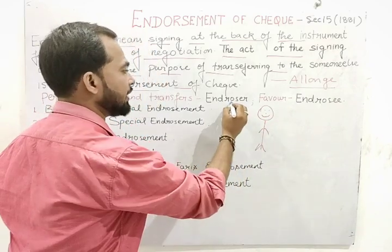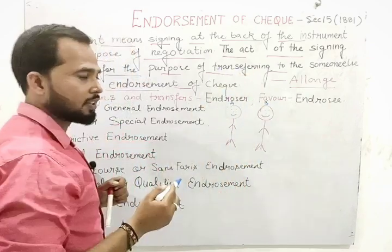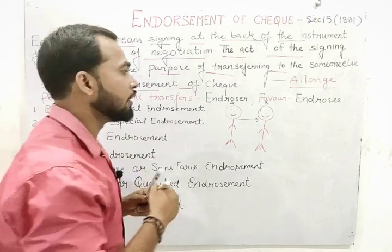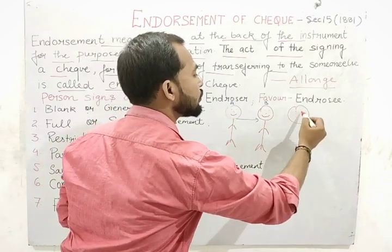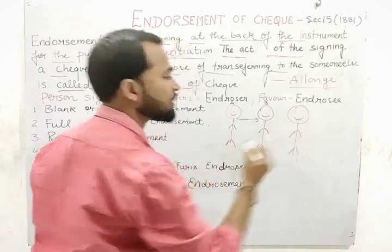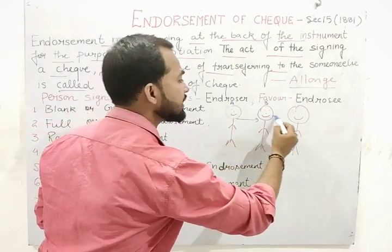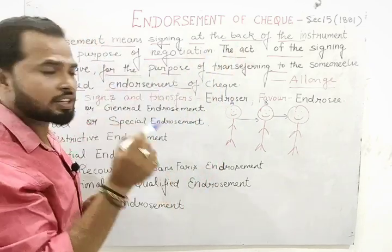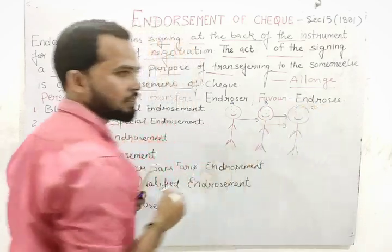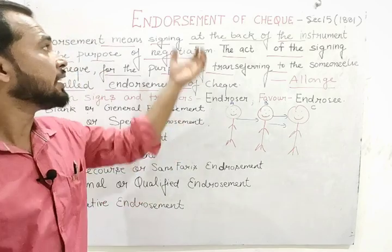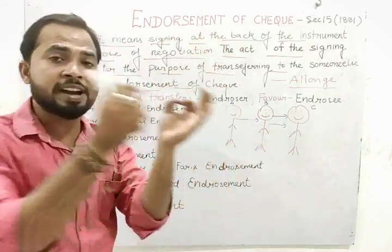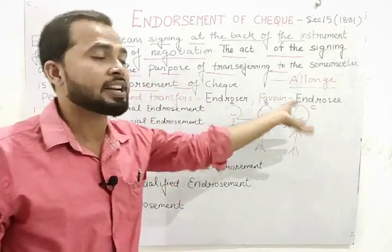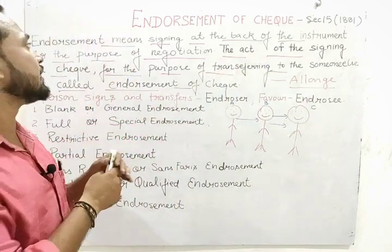For example: Mr. A has written a check in favour of Mr. B. Suppose it is an order check, and Mr. B wants to transfer it to Mr. C. So how can he transfer it? He has to write on the back side of the check that this particular check will be transferred to Mr. C and make his signature. This process is known as endorsement.